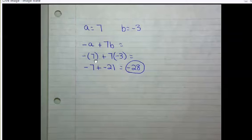The opposite of 7 is negative 7. And 7 times negative 3 is negative 21. And now we can add negative 7 plus negative 21, which is negative 28.